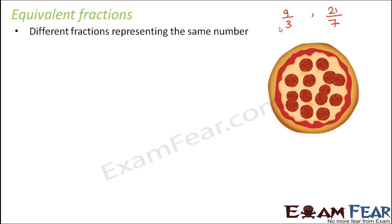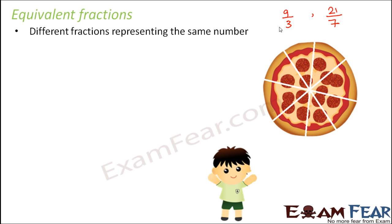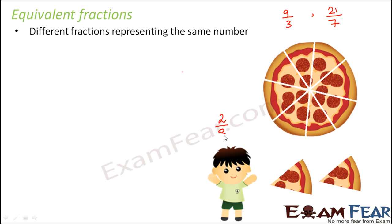Let us consider this example. There is a pizza and a boy wants to have pizza. He cuts the pizza into 8 equal slices and eats 2 slices. So if I ask what fraction of the pizza did the boy eat, he ate 2 slices out of 8 slices, that means 2 by 8, which is nothing but 1 by 4. So the boy ate 1 fourth of the pizza.